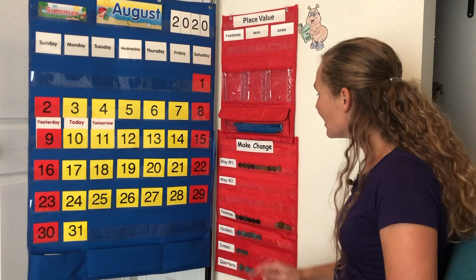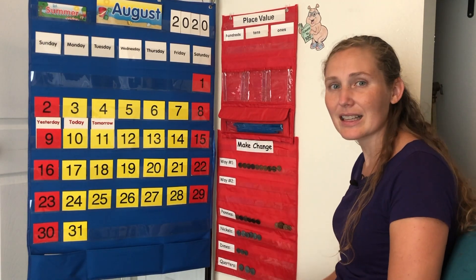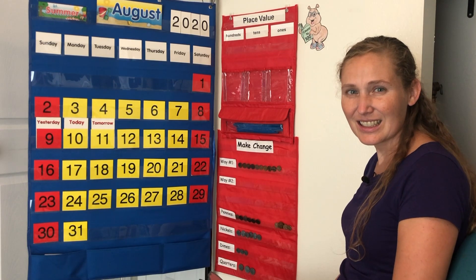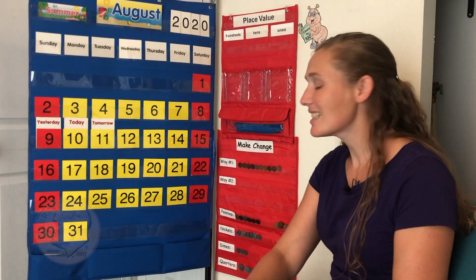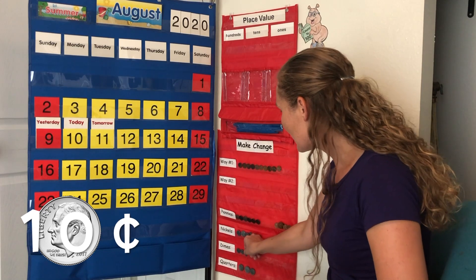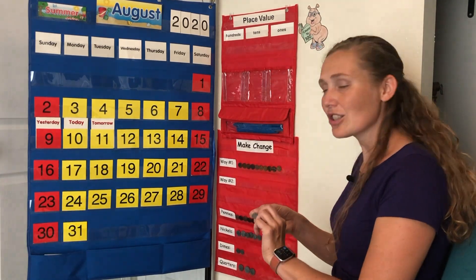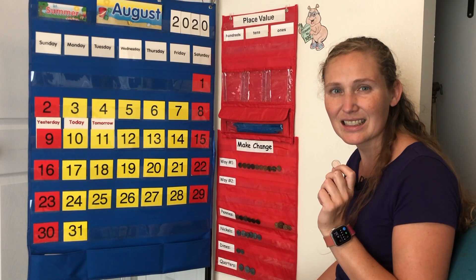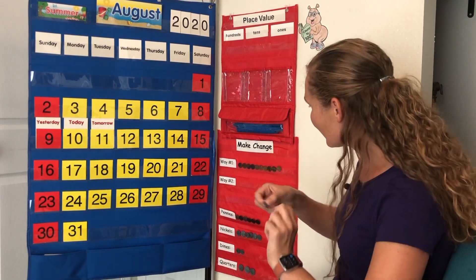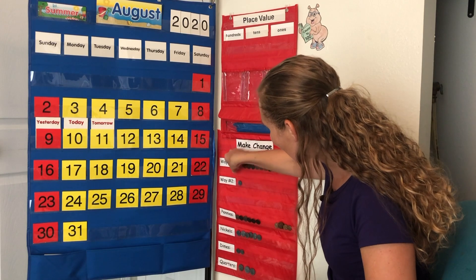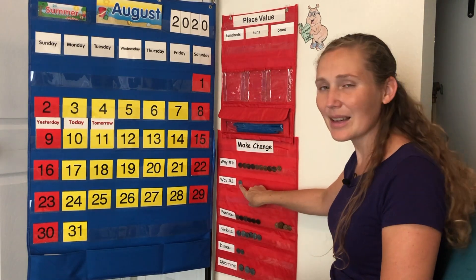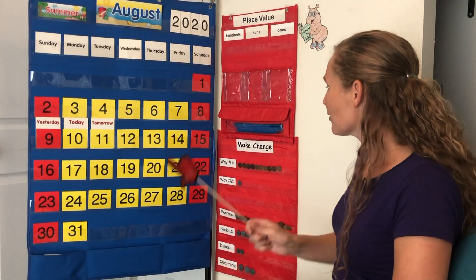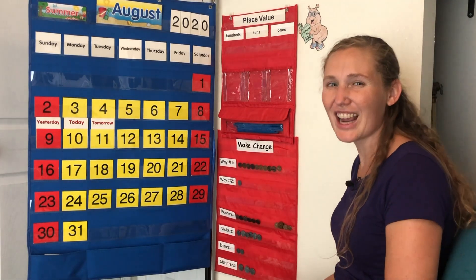Do you think there's another way that we can make the number 10 with money? Yes! A dime is worth 10 cents. So how many dimes would it take to make the number 10? Only one! A dime is worth 10 cents. One dime worth 10 cents. We have two ways we've made change.